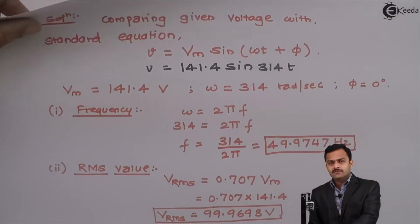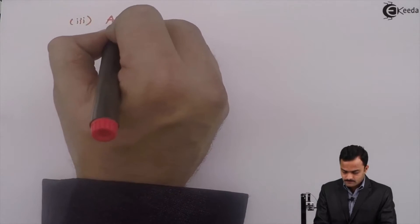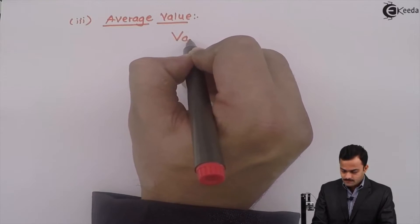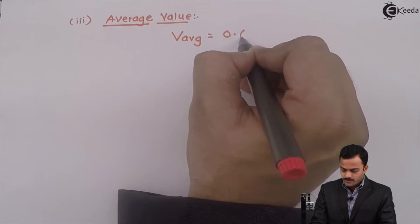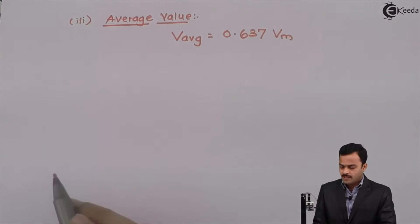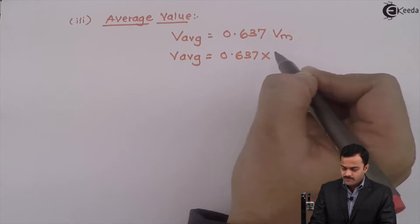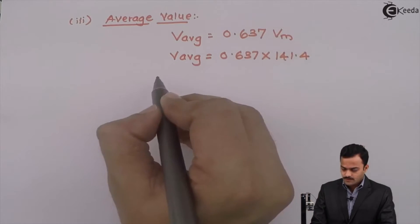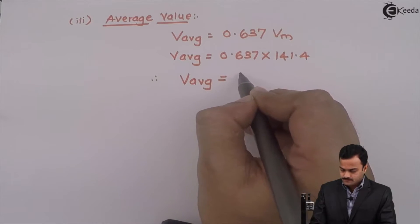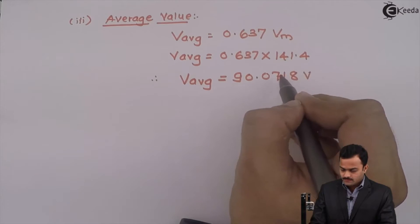Once we know the maximum value, we can get average value. Average value, third point: V average equal to 0.637 times maximum value. Maximum value is 141.4. If I solve, I will get average value as 90.0718 volt.